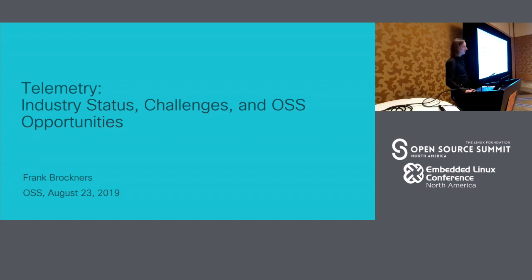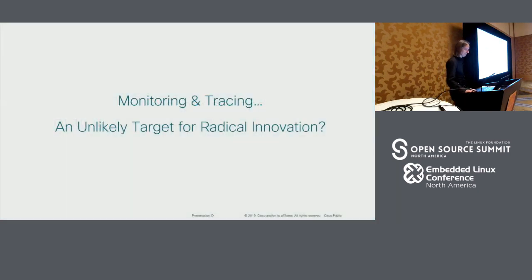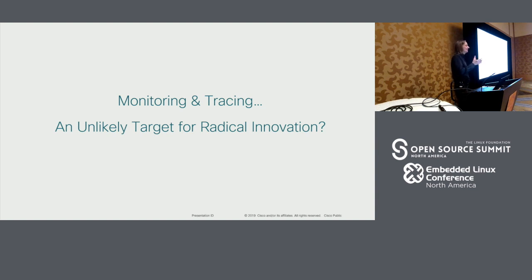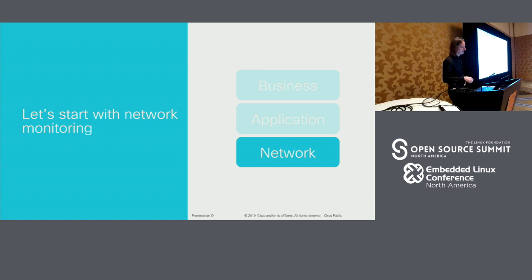Today it's still relatively fragmented, but I think we're evolving to something that is more of a system, and hence usable as a system. Taking a couple of steps back, if you're talking about monitoring and tracing, most people say that's kind of at the tail end of innovation. Is that really a target for radical innovation where something really is changing? Well, historically maybe not so much, but I think we're seeing more and more change in that particular area.